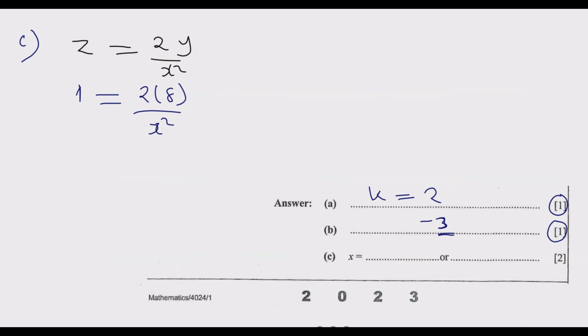At this point, we do cross multiplication: x squared times 1, so we cross here. X squared equals 2 times 8, which is 16.